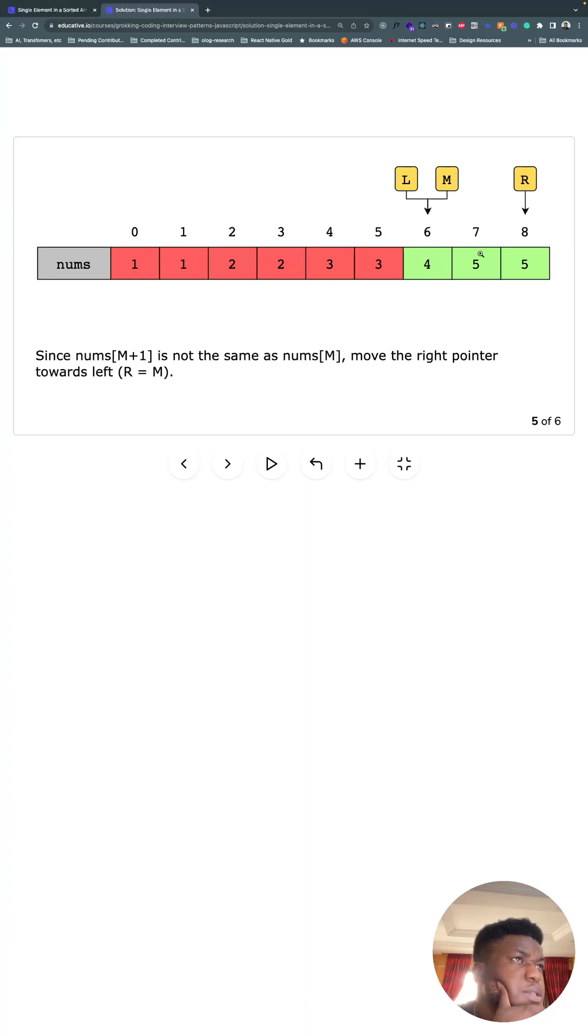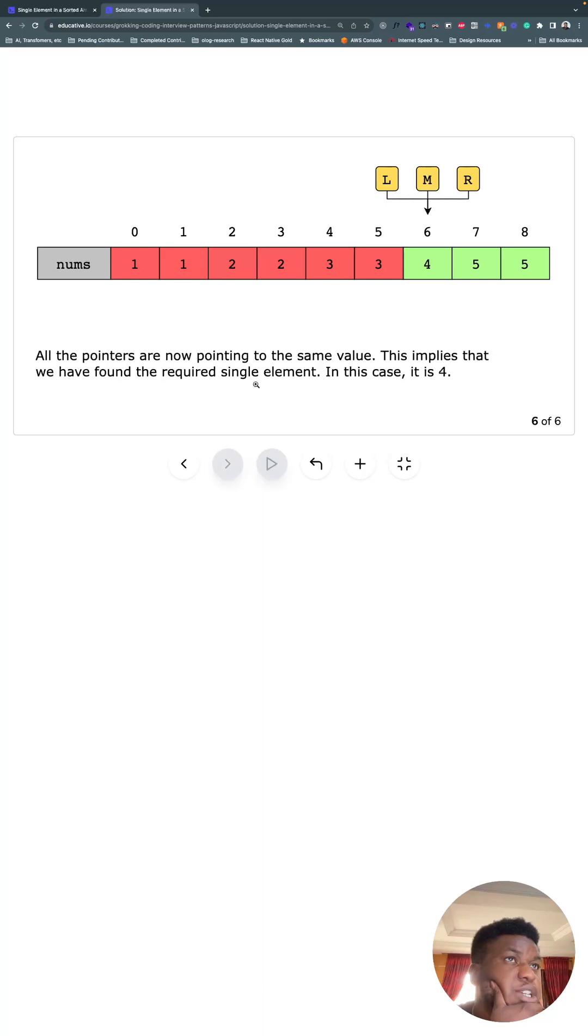It's not the case, and because it's not the case we know that the problem is going to be in this part of the solution. So we move the right pointer towards the left. Set the right pointer to what's at mid and check again. Now everything is pointing at the same thing and that's our value. So yeah, that's all there is to it.